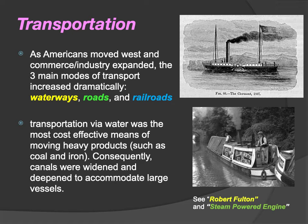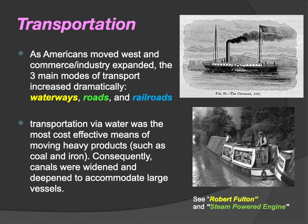Transportation via water was the most cost-effective means of moving heavy products such as coal and iron. Canals were widened and deepened to accommodate large vessels, and the Mississippi River became a huge economic waterway for goods produced out west. Robert Fulton was the first inventor of the steamship, which made it much easier to travel up the Mississippi River — using engine power to move against the current so rivers could be used more effectively.